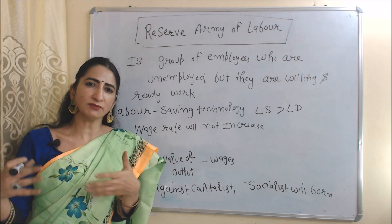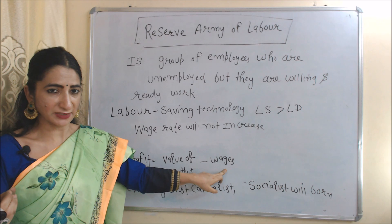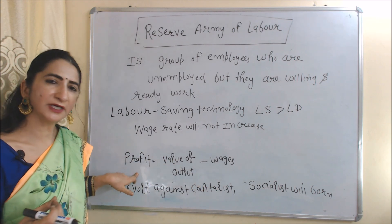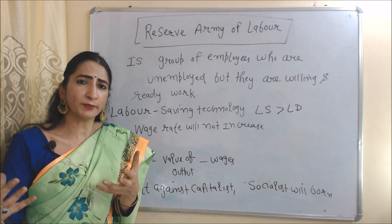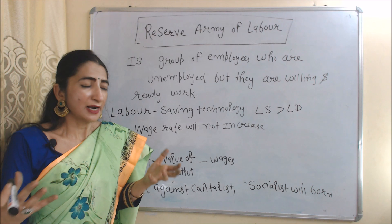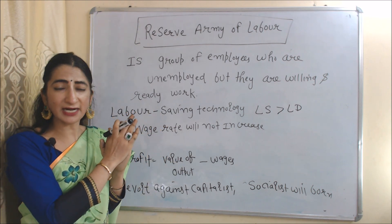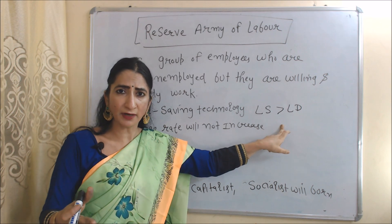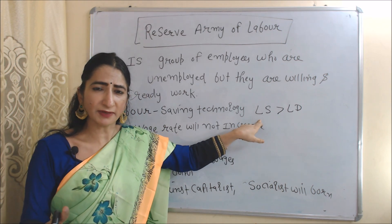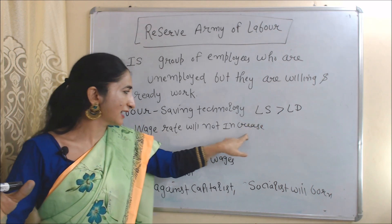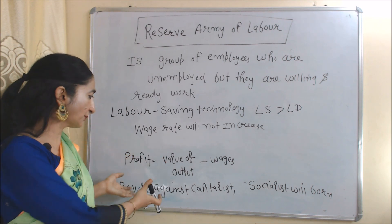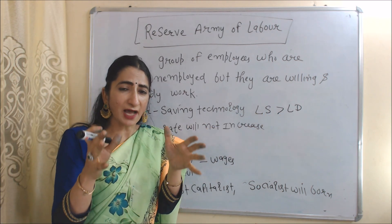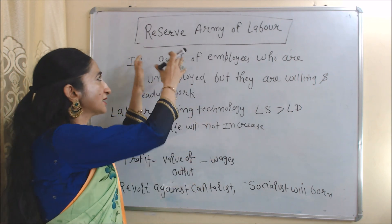Capitalists want to earn more and more profit, and their profit depends on wages — profit is the difference between value of output minus wages. If wages are low, profit is more. To earn more profit, capitalists try to reduce wages and sometimes use labor-saving technology, meaning they use more machinery for production. If they use more machinery, they demand less labor — so labor supply becomes more than labor demand. If labor supply is always more than labor demand, the wage rate will not increase, keeping capitalist profit high. But when labor supply exceeds labor demand, some employees are unemployed — these unemployed employees are called the reserve army of labor.